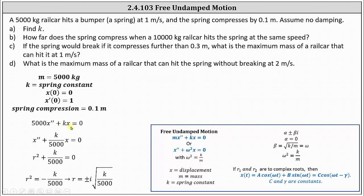Dividing through by 5,000, we have x'' + (k/5,000)x = 0. This is a second order linear homogeneous differential equation with constant coefficients, which we solve using the characteristic equation r² + k/5,000 = 0. Solving for r, we get r = ±i√(k/5,000).